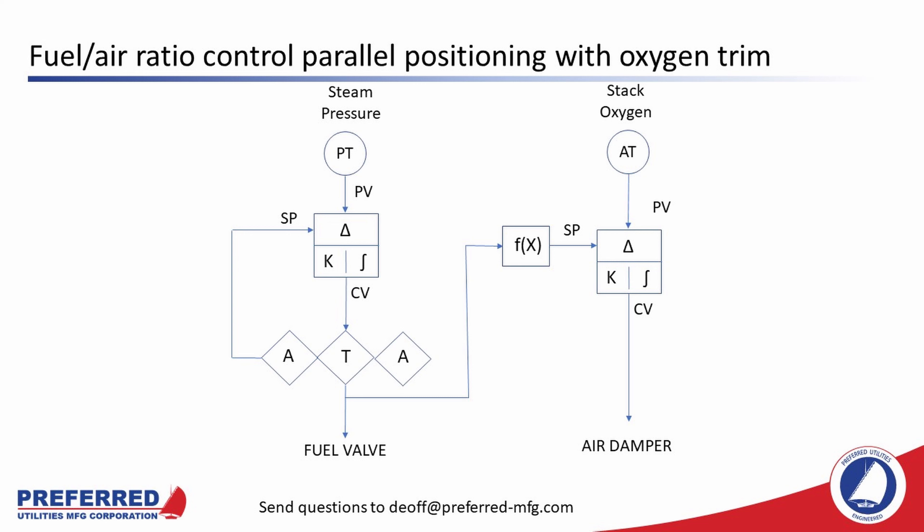Most parallel positioning systems include an output for a forced-draft variable-speed fan as well. So at each firing rate, the burner technician determines the best air damper position, the best VFD speed, and the best stack oxygen. When the controller is put into automatic, it biases the air damper and VFD left or right on their curves to maintain the desired stack oxygen set point for that firing rate.